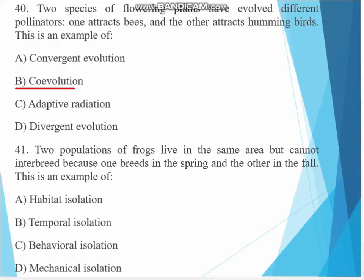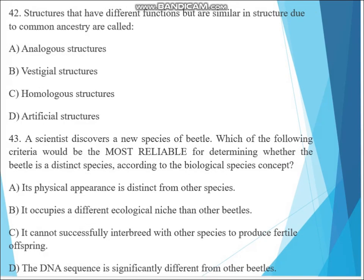Question 41. Two populations of frogs live in the same area but cannot interbreed because one breeds in the spring and the other in the fall. This is an example of: A. Habitat isolation, B. Temporal isolation, C. Behavioral isolation, D. Mechanical isolation. The answer is temporal isolation.